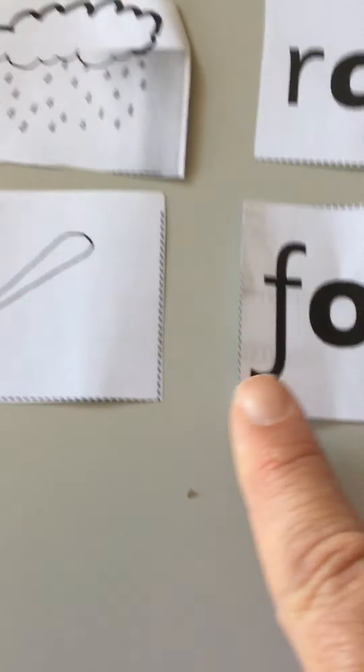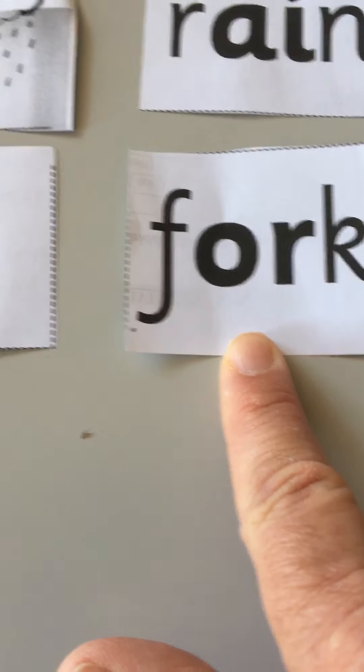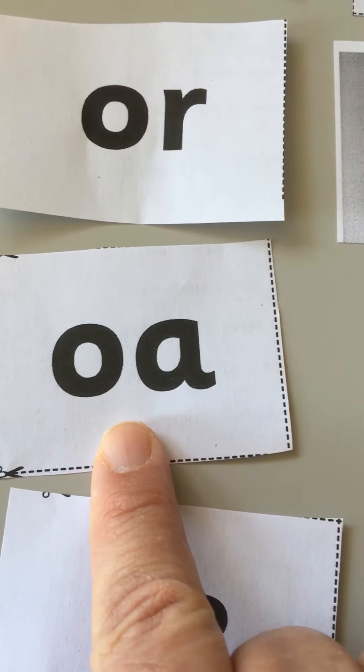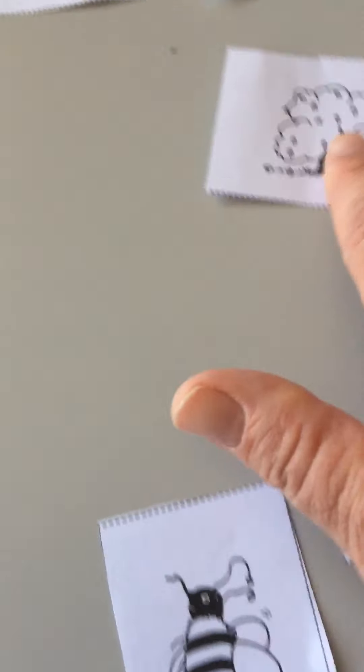OR, fork, fork. Next, we want the OA. It's an oak tree, it's a kind of tree. So we want oak tree. Okay.